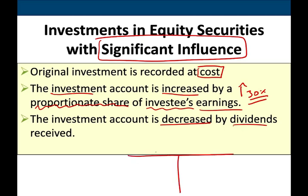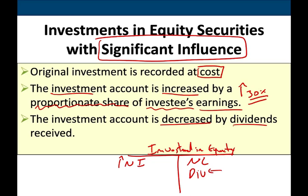We have an account called investment in equity. Here's what's going to happen: every time you have net income, it's going to increase your investment. Every time you have a net loss, it's going to reduce your investment. And every time you have dividend, it's going to reduce your investment. We'll explain why dividends reduce your investment shortly when we work with numbers — it's easier to see with numbers.